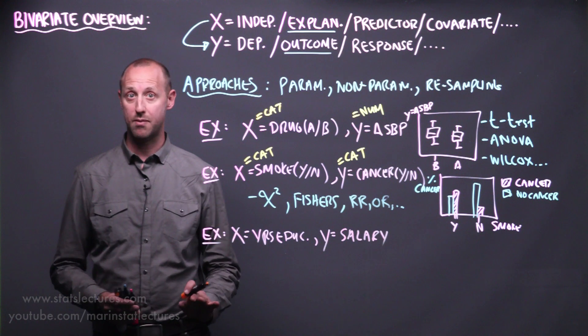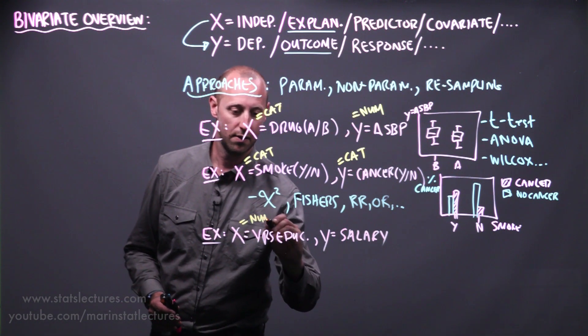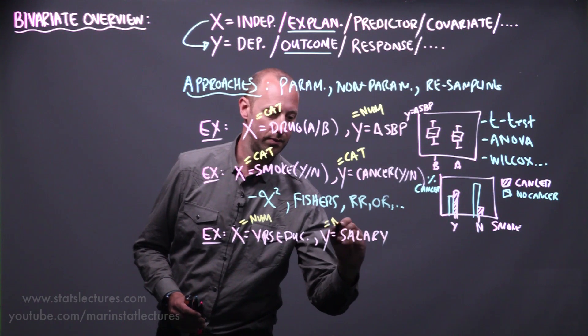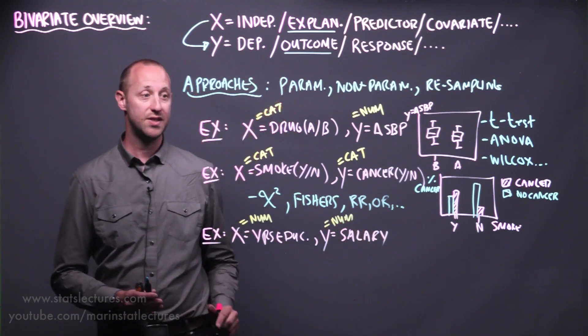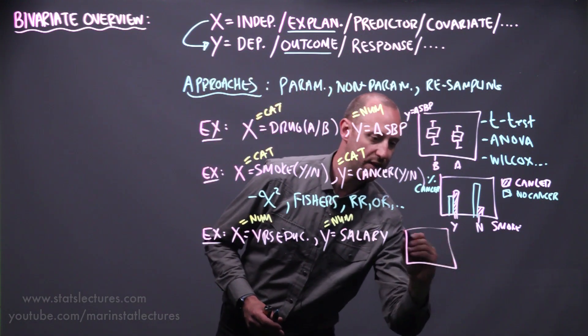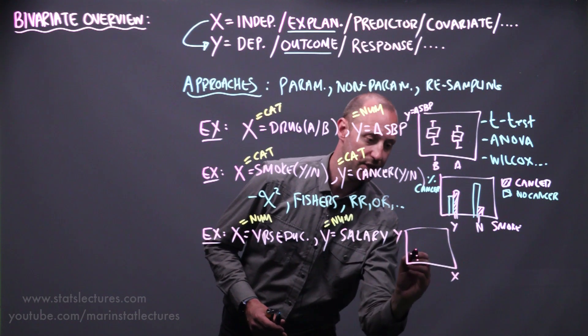Again here we can think of what type of variable we have. Our x variable is numeric, our y variable is also numeric.